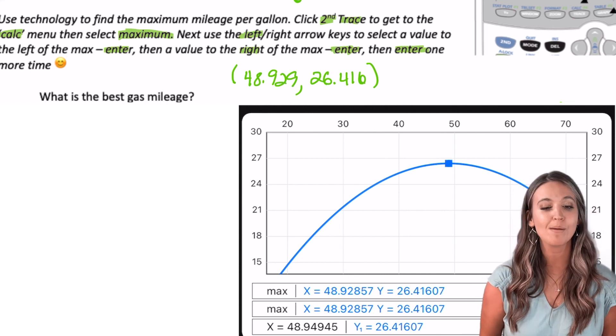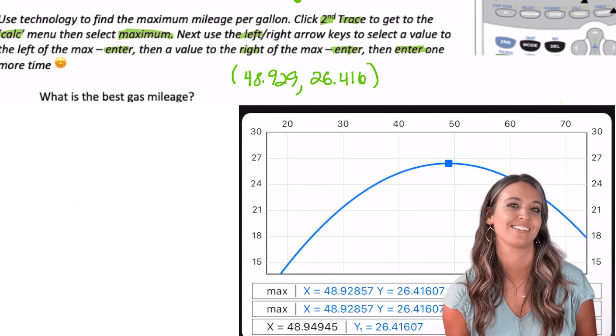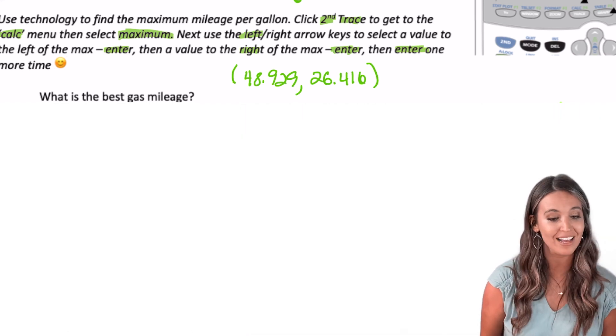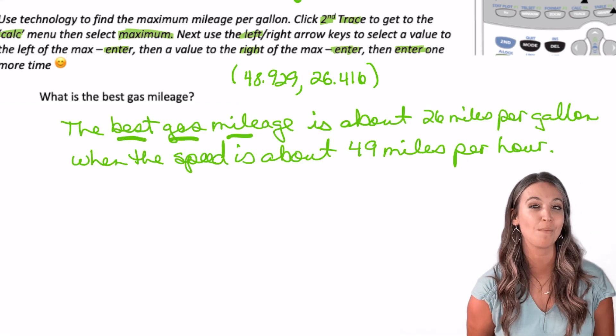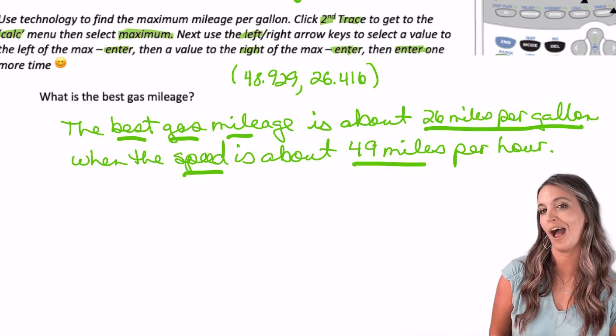Then my calculator gives me the maximum value and where it occurs. The coordinate would be (48.929, 26.416). This means the best gas mileage is about 26 miles per gallon when the speed is about 49 miles per hour.